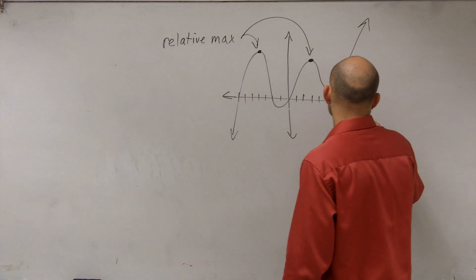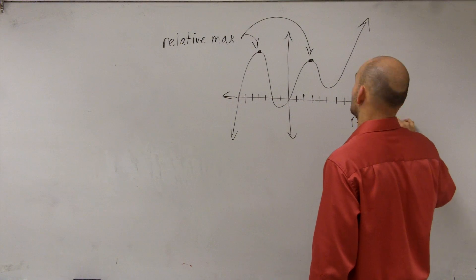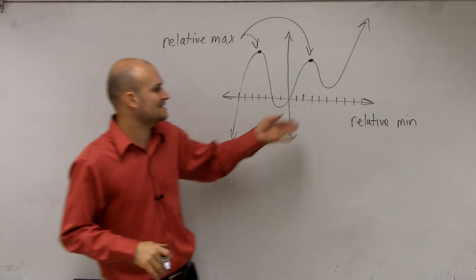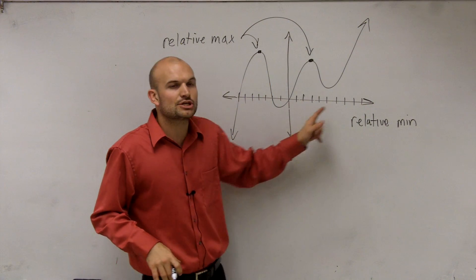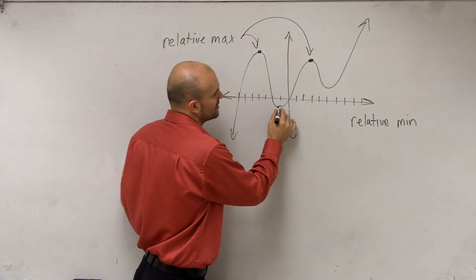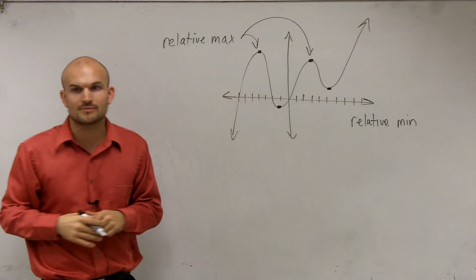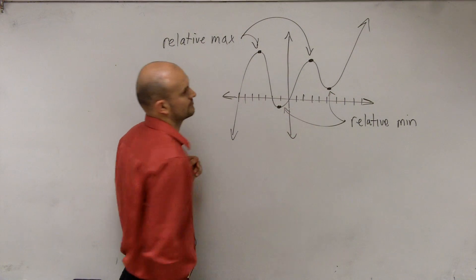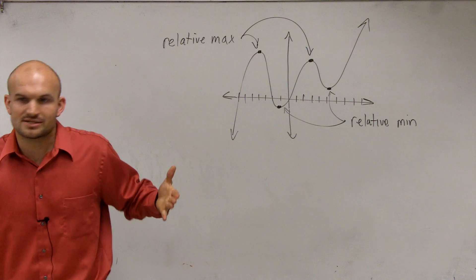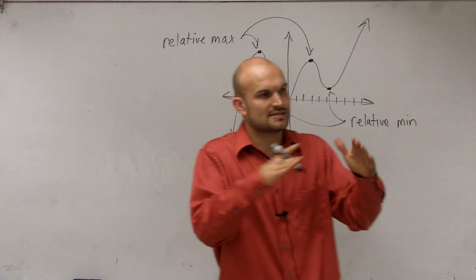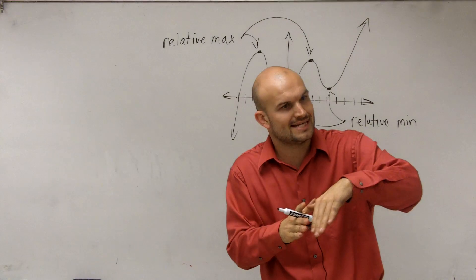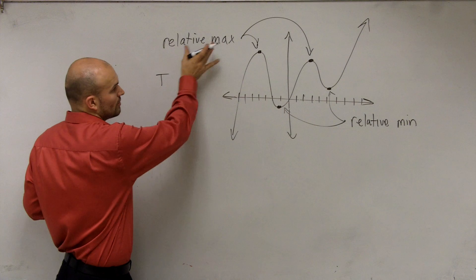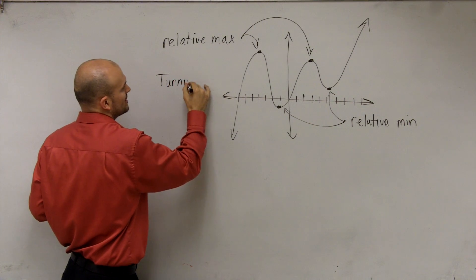Then we'll talk about relative minimums. A relative minimum is kind of the exact opposite — as the graph is decreasing but then turns to increasing, you have these little relative minimum points. So we have two little relative minimums here. These are what we call our relative min. Now one vocabulary word to note: when the slope is increasing and then turns downward, or decreasing and then turns upward, these are also what we call our turning points.